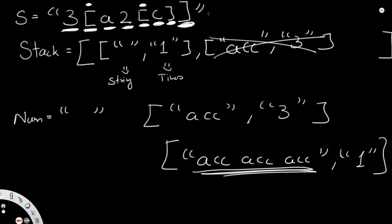Just to add on: if after the closing bracket we had letters like 'X', 'Y', 'Z' with no number before them, since they're just letters with no repeat count, we simply add them directly to the string portion of the last stack element. So they just get appended as-is, and that becomes part of the final output.